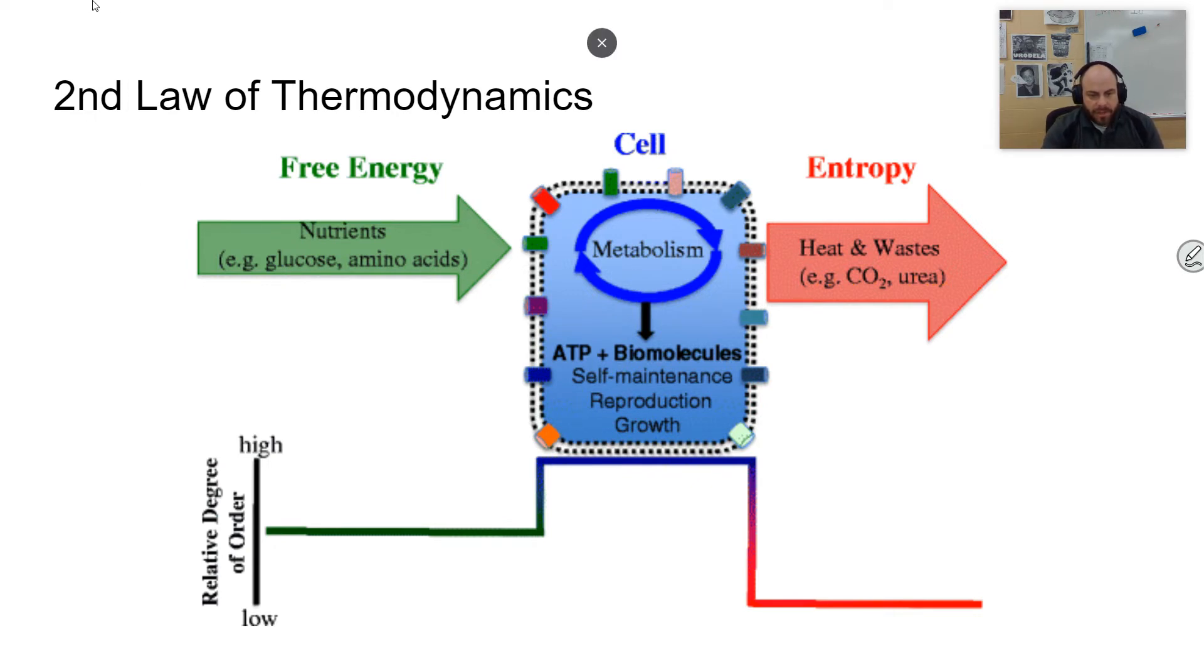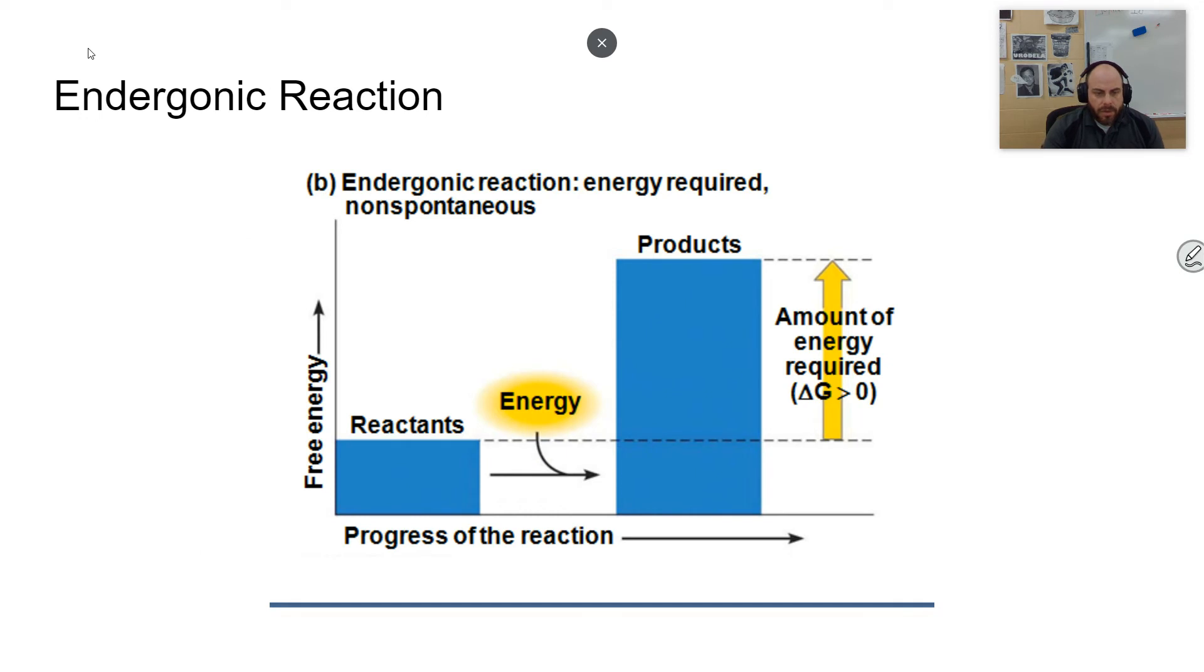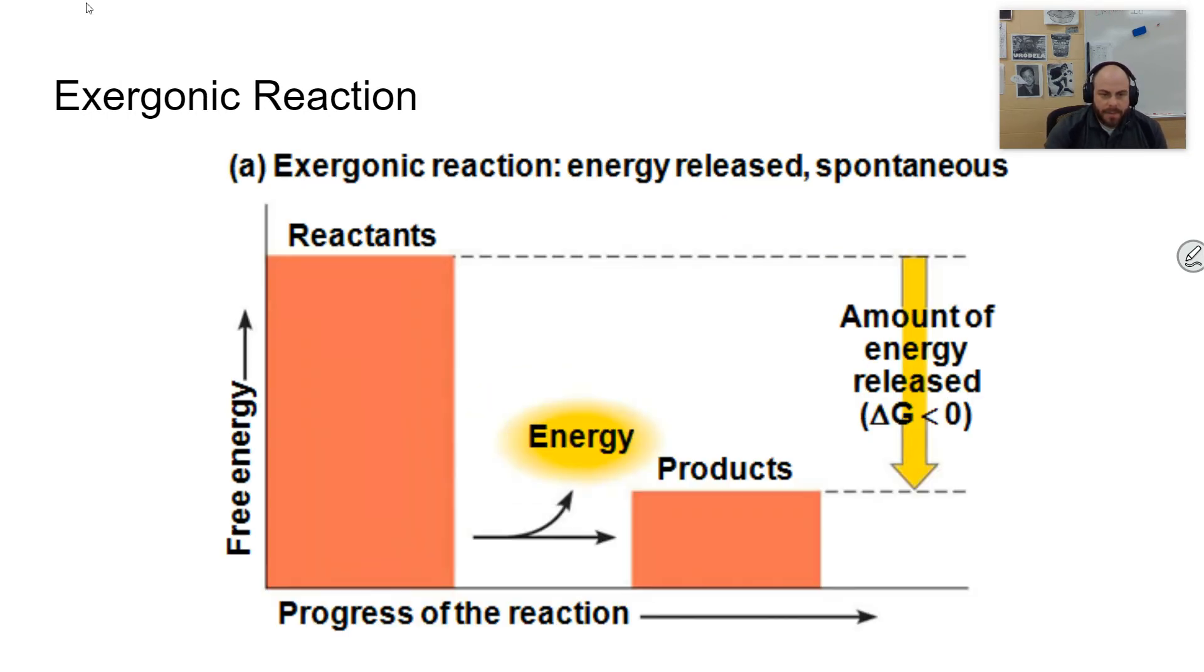And so there are basically two kinds of reactions that are going on. You have endergonic reactions. This is where the products have more energy in them than the reactants. You can see that here simply. This is where there's a certain amount of energy put into the system, and thus the products have more usable energy or free energy available. An example of this would be photosynthesis. The opposite of this is called an exergonic reaction, where you start with more energy than you end with. Cellular respiration is going to be the example that we use here.